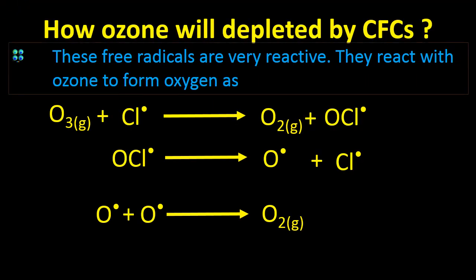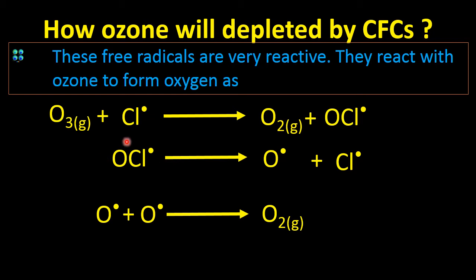The ozone layer is depleting because chlorofluorocarbons generate nascent free radicals of chlorine in the stratosphere. These chlorine free radicals react with ozone and convert it into oxygen molecules. The nascent oxygen atoms formed by the chlorine radicals then join together to give oxygen molecules instead of re-forming ozone. In this way, chlorofluorocarbons are the main cause of ozone layer depletion.